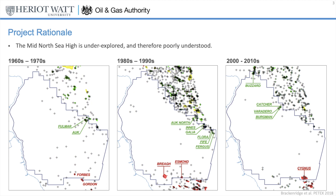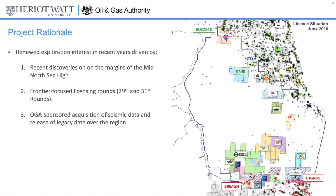Indeed, this region currently provides around 9% of domestic gas and approximately a quarter of domestic oil supply to the UK. This map shows the current licensing situation and shows that there has been a recent rejuvenation in exploration interest. This has been driven by the recent discovery of fields such as Buzzard, Brea and Cygnus in areas that would have previously been considered as lying beyond the mapped play extents.